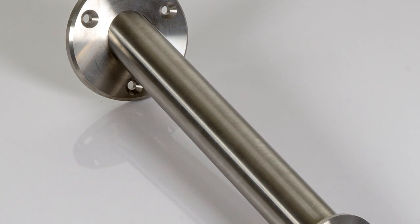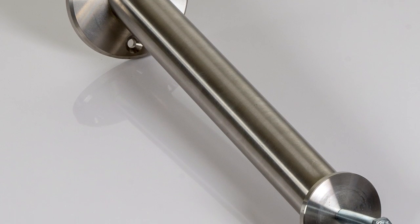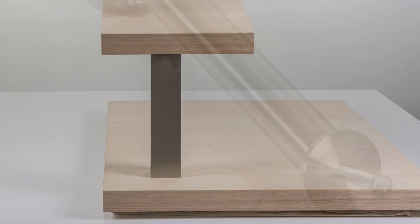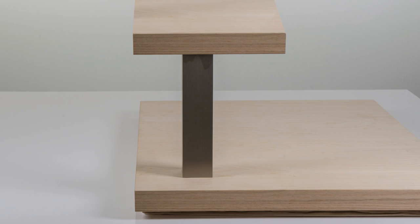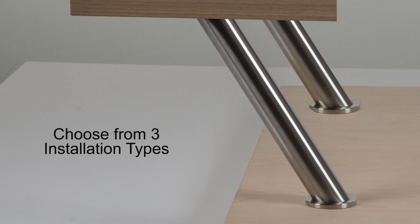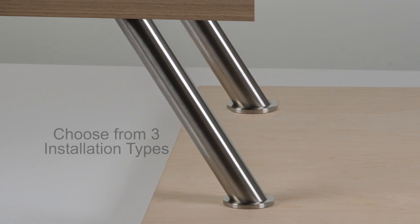Countertop supports and bar consoles can be installed in the configuration best suited to your application. Add a vertical 90 degree angle for upright support, an angled support to create an overhang, or side mounted to the island or base cabinet.